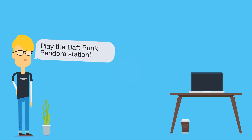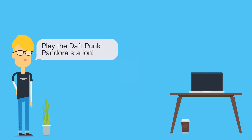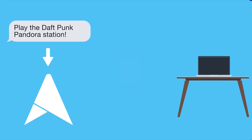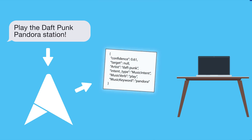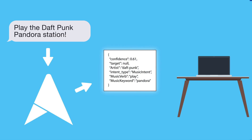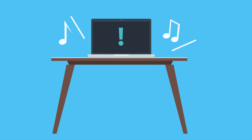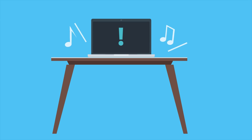To demonstrate this, a user might say: "Play the Daft Punk Pandora Station." The Adapt engine takes this input and translates it into a JSON data structure that can be read by the application. The application can then take that information and turn it into an action — in this case, it will play the Daft Punk Pandora Station.